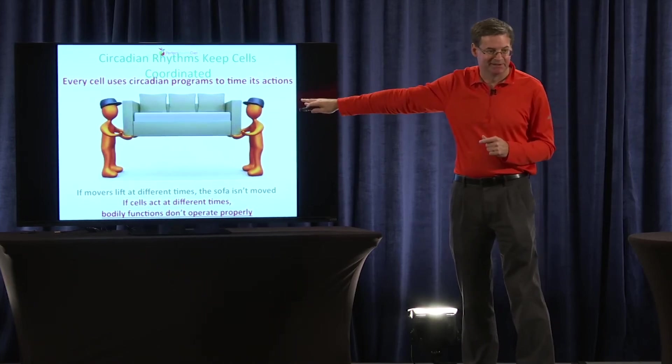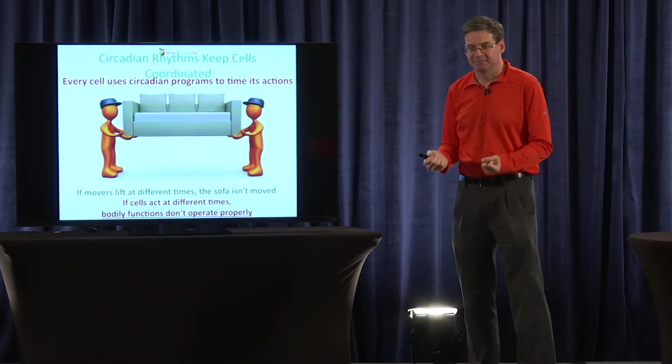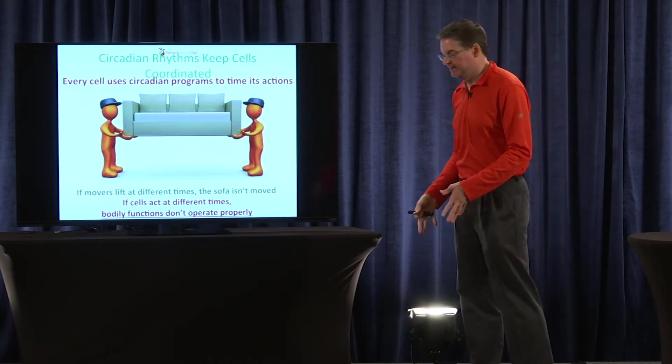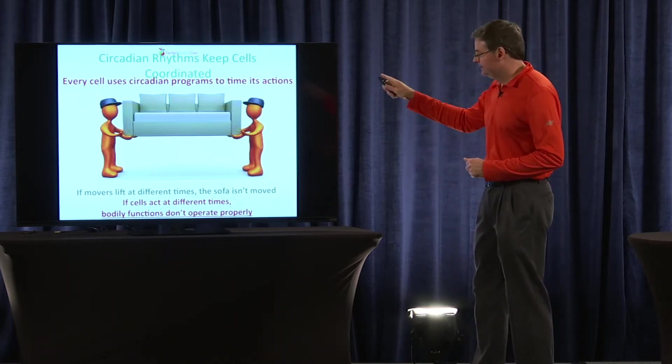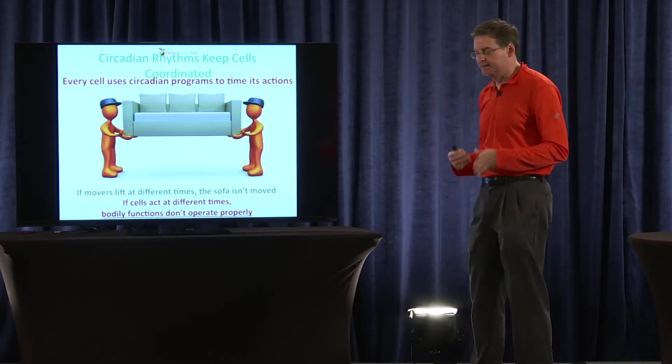They have no ears and mouths, so they can't talk to each other. But they need to lift at the same time, they need to walk in the same direction, or else the sofa is going to fall down. So they need to coordinate their activities, but if they can't communicate, how do they do it?